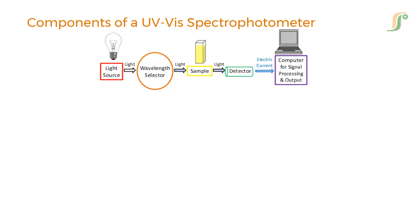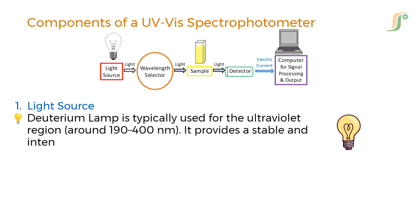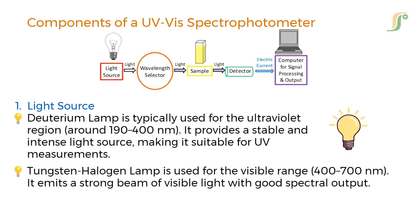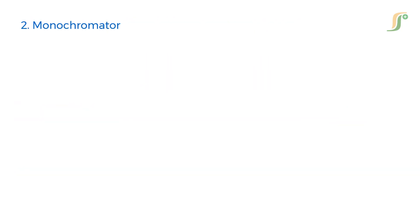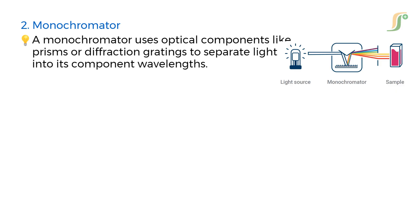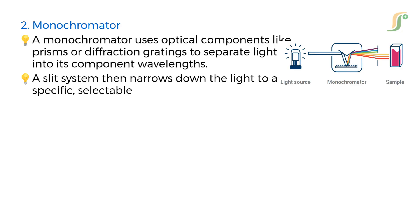A UV-visible spectrophotometer is a sophisticated yet easy-to-understand analytical instrument made up of several essential components. The light source includes a deuterium lamp, typically used for the ultraviolet region around 190 to 400 nanometers, which provides a stable and intense light source suitable for UV measurements. A tungsten halogen lamp is used for the visible range, 400 to 700 nanometers, emitting a strong beam of visible light with good spectral output. The monochromator uses optical components like prisms or diffraction gratings to separate light into its component wavelengths, and a slit system then narrows down the light to a specific, selectable wavelength which is sent to the sample.